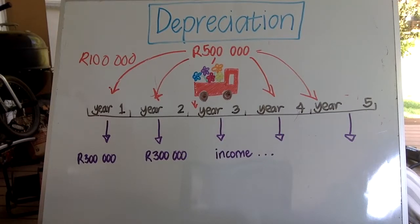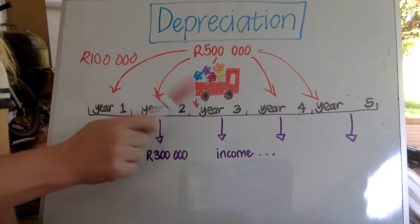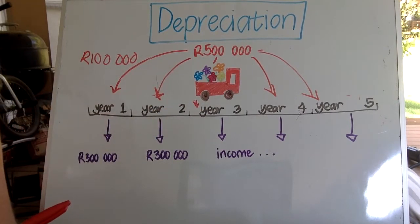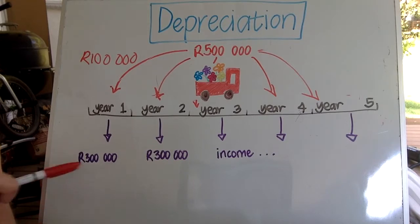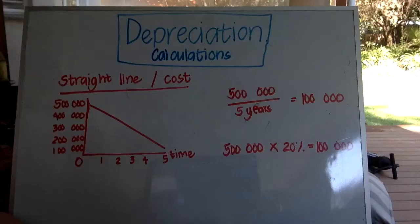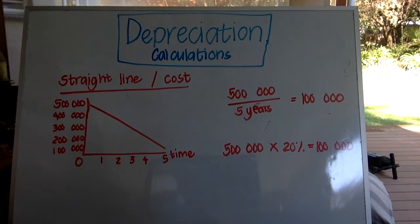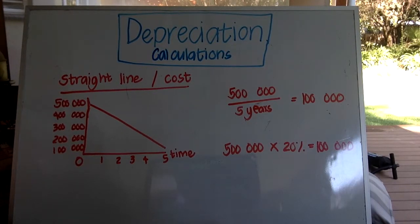That is your basic concept of depreciation. What we are doing is taking the asset and writing off part of that cost each year as an expense that can get offset against the income. There are a number of ways in which you can calculate the depreciation you want to write off each year. The two main ones are straight line and diminishing balance, and then we'll also look at a couple of others.